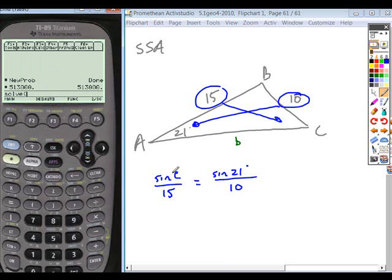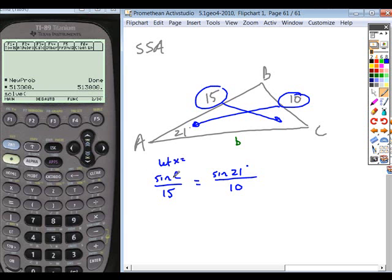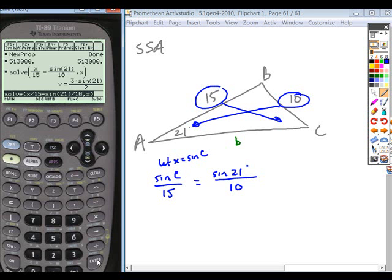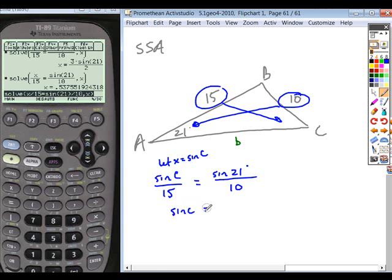So if you're going to use the solve key, what you would need to do on this is you'd need to let whatever you're solving for be the whole sine of C if you're going to solve it this way. And so in doing this, you would say X over 15 equals sine of 21 over 10. So X divided by 15 equals the sine of 21 over 10. And you're going to solve for X. But what you have to understand, what you're solving for here isn't your answer. It's the sine ratio for the angle you want. So if you hit enter and let's say we put it in decimal form, what you get is sine C is equal to 0.53755, so on.